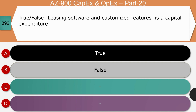True or false: Leasing software and its customizable features is a capital expenditure. The right answer is false. Leasing software or a feature has a fixed time frame — we are availing the services of software for a specific period. For such a period there is a charge applicable, and these charges are classified under OpEx.